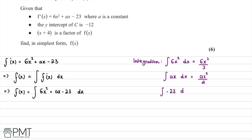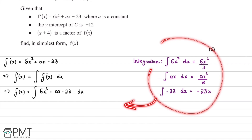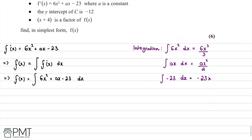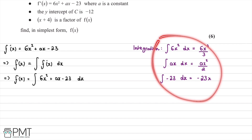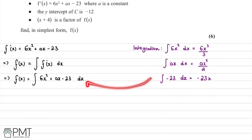Finally, negative 23 integrated with respect to x: since we have no x at the moment, we get x to the power of 1, so negative 23x. We substitute these back into our equation and add the constant of integration C — we'll add that when we write all our terms together.